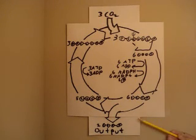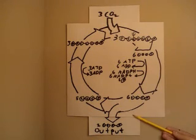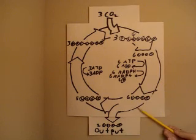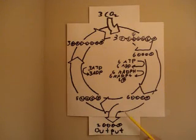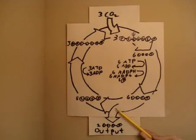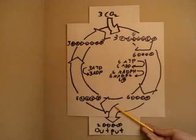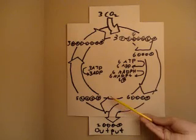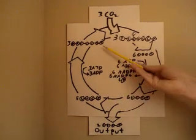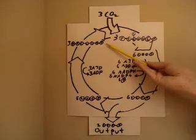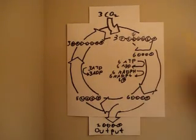One of the PGAL leaves the Calvin cycle and five of them continue on, which through a series of enzymatic reactions reform the three RuBP molecules at the beginning.